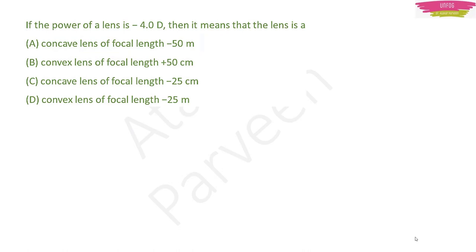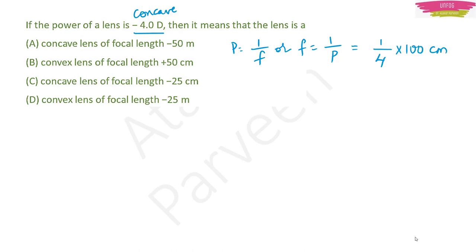Question: If the power of a lens is −4.0 D, what type of lens is it? Negative power means concave lens. Focal length = 1/P = 1/4 = 0.25 m = 25 cm. Since it is concave, focal length is −25 centimeter — option C.